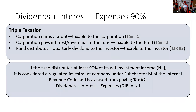Most mutual funds do much, much better than that. If we didn't have Subchapter M or the Conduit or Pipeline Theory, what would happen is the corporation would make money, pay taxes. The corporation then pays either interest on its bonds or dividends on its stocks that the mutual fund portfolio owns, and it would be taxable to the fund, and the fund would distribute that dividend to you, the mutual fund shareholder, and you'd get taxed. That money would be taxed three times.